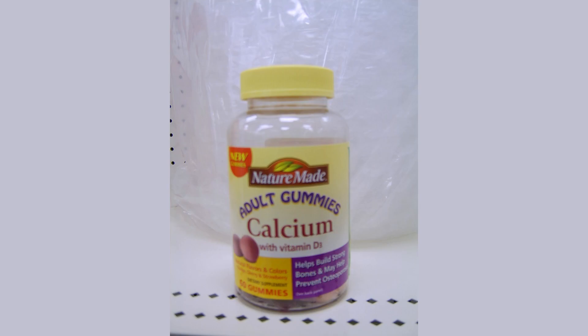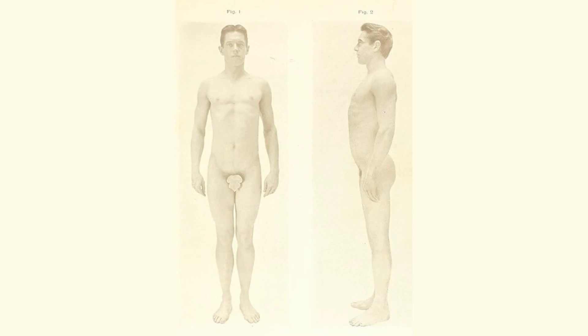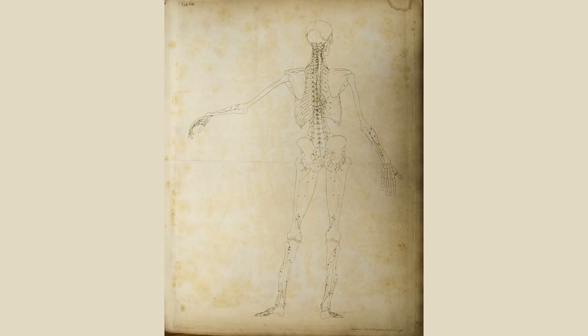Fourthly, bones store minerals such as calcium and phosphorus, which are essential for maintaining strong bones and teeth. Finally, bones work together with muscles to allow movement and perform physical activities. The skeletal system and muscular system work together to create movement, with muscles pulling on bones to create motion. Without bones, our body would be unable to move or perform physical activities.